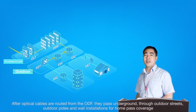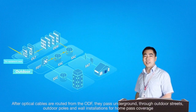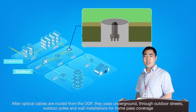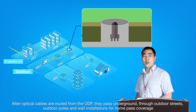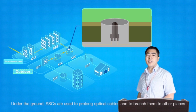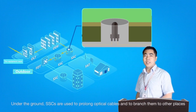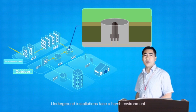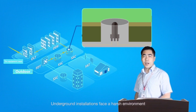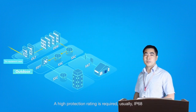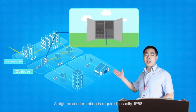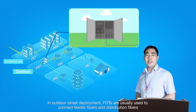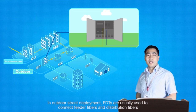After optical cables are routed from the ODF, they pass underground through outdoor streets, outdoor poles, and wall installations. For home pass coverage, underground SSCs are used to prolong optical cables and to branch them to other places. Underground installations face a harsh environment, so a high protection rating is required — usually IP68.